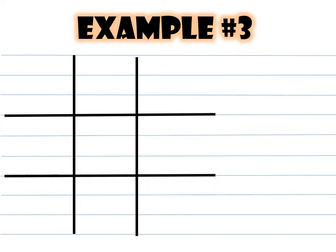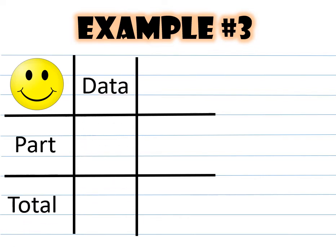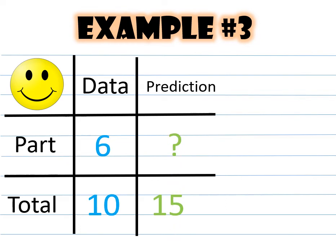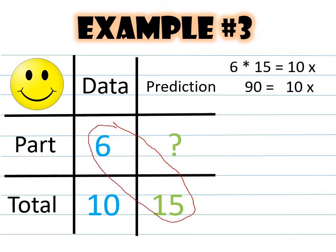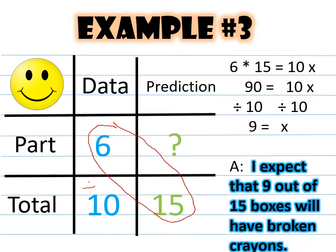Now let's see what this looks like using the tic-tac-toe board. We put part and total, data and prediction. Six out of ten boxes were used; there's a total of 15 boxes. We cross multiply six times 15 to get 90, then divide by 10 to get 9 — just like before. I expect that nine out of 15 boxes will have been used.